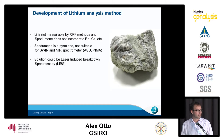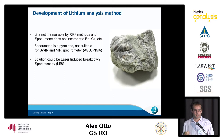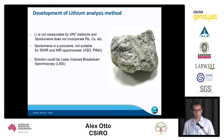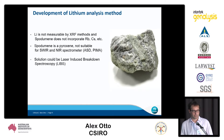LIBS essentially involves shooting a laser at a rock or mineral to excite a plasma. When the plasma decays, it emits characteristic light which you detect with a spectrometer, then apply quantification methods to understand how much lithium is present. This is a direct elemental analysis.